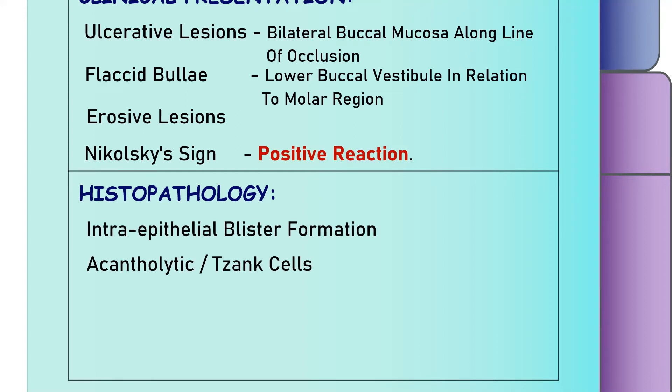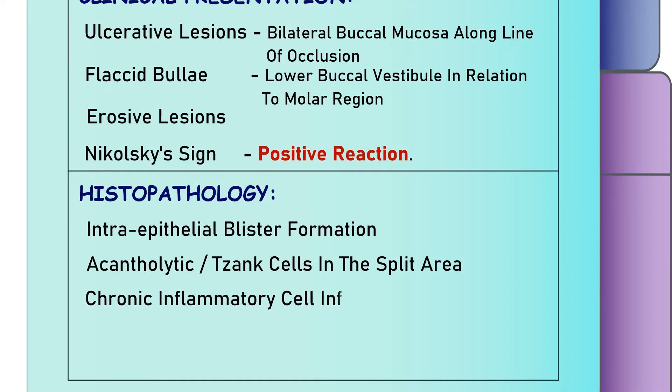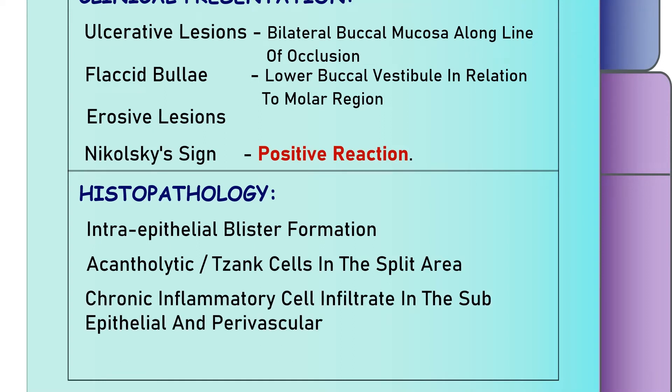Histopathology reveals intraepithelial blisters, acantholytic Tzanck cells in the vesicular space, and chronic inflammatory cells in the connective tissue region.